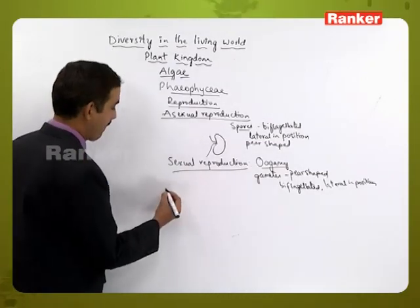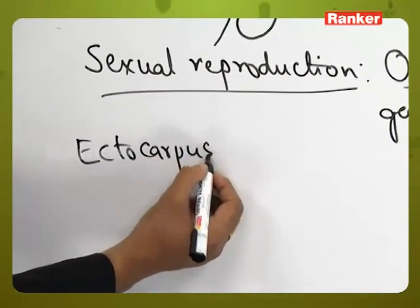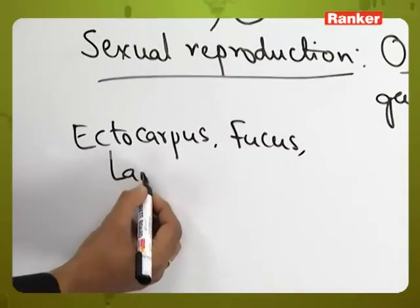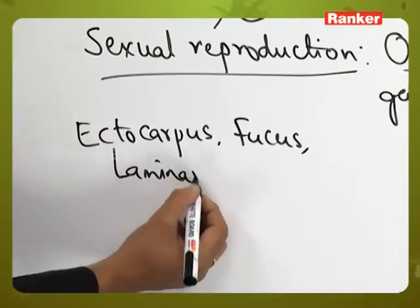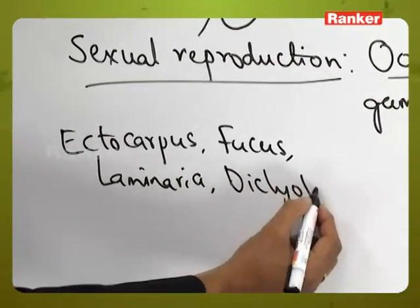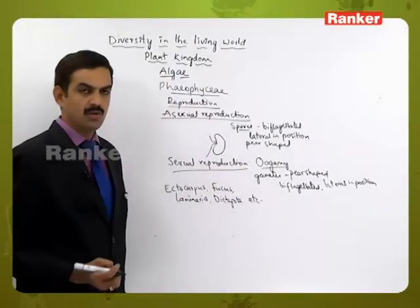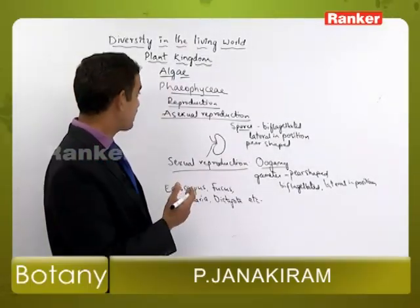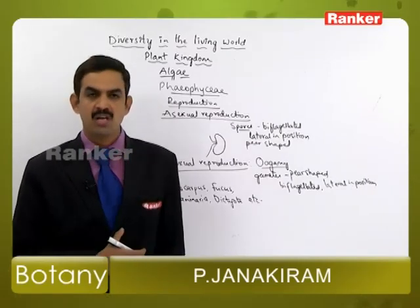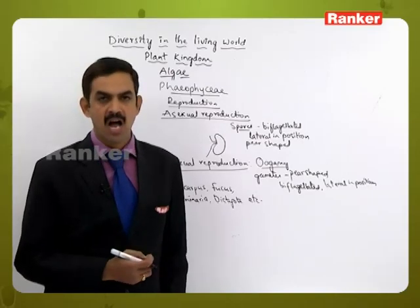Some important examples of Phaeophyceae members are Ectocarpus, Fucus, Laminaria, and Dictyota. The kelps are also members of this group. One more important feature is that Phaeophyceae members produce iodine and a water-holding substance called algin.